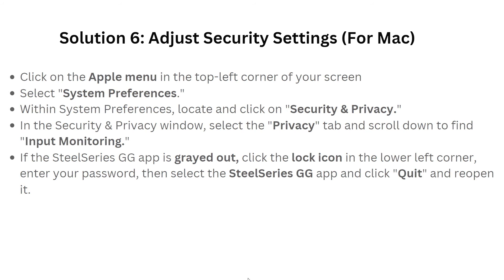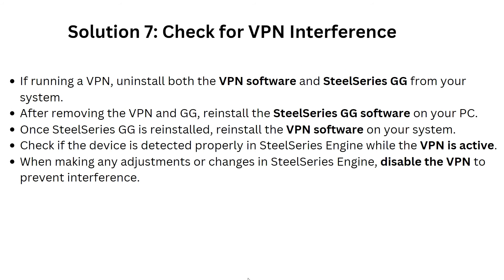In solution seven, we have to check for VPN interference. If running a VPN, uninstall both the VPN software and SteelSeries GG from your system. After removing them, reinstall the SteelSeries GG software first. Then reinstall the VPN software. Check if the device is detected properly in SteelSeries GG Engine while the VPN is active. When making any adjustments in SteelSeries GG Engine, disable the VPN to prevent interference.